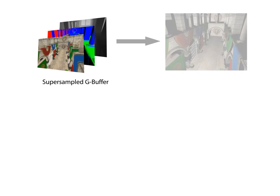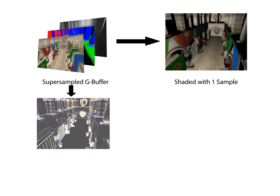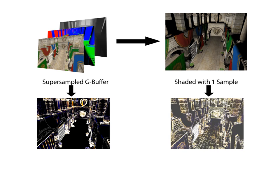Second, we shade the first sample for each pixel, giving us a first guess of the final result. Then, we run an evaluation pass which applies our geometric metric to the enlarged G-buffer and a shading metric that evaluates the image rendered with a single sample.